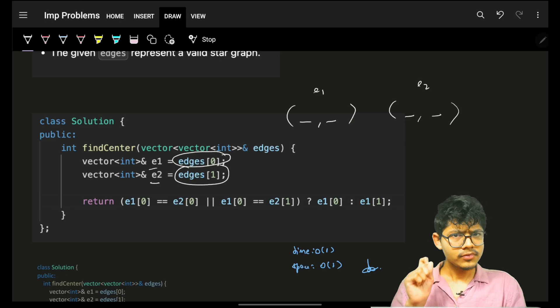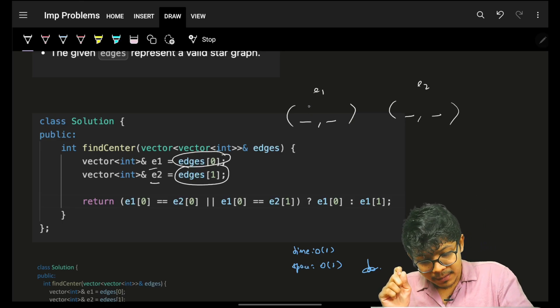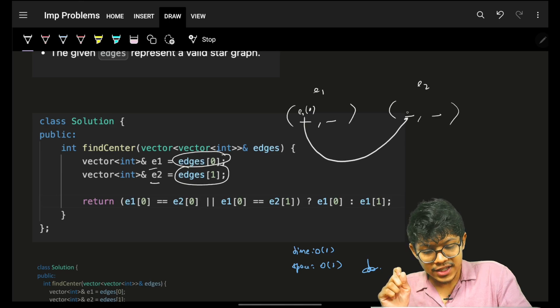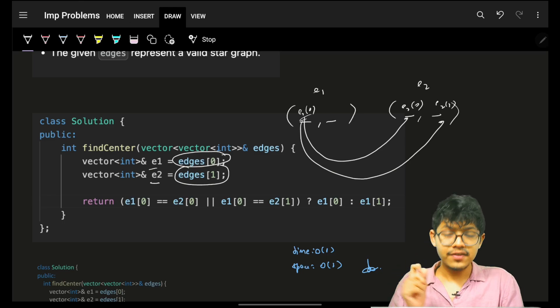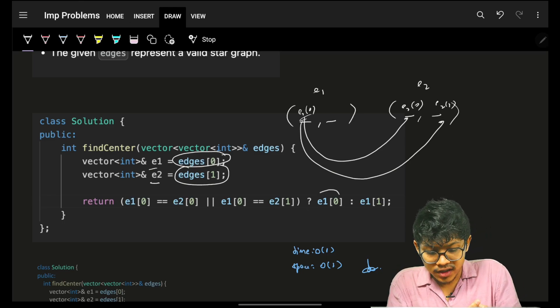This is e1, this is e2. I will simply compare e1[0] with my e2[0], or if it is equal to my e2[1], which means that this e1[0] is common, in that case I will return e1[0].